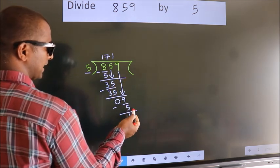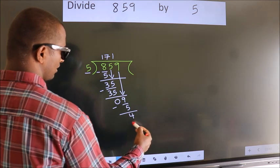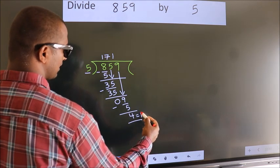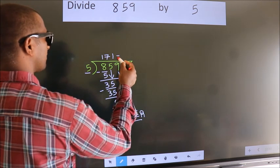No more numbers to bring it down. So we stop here. This is our remainder. This is our quotient.